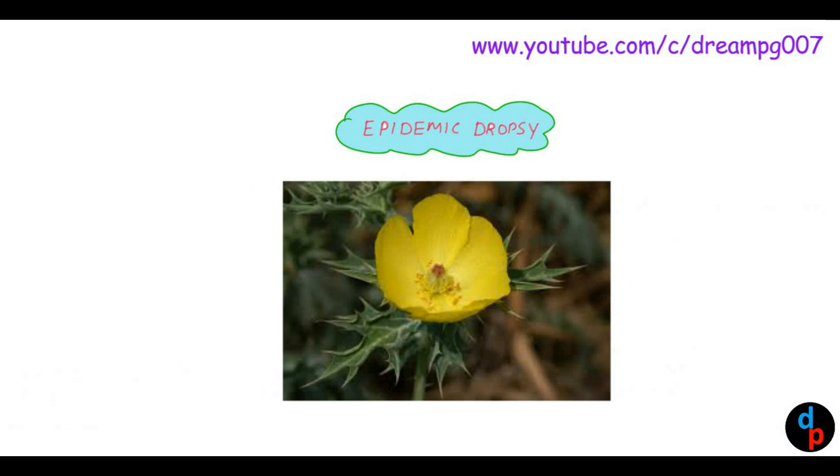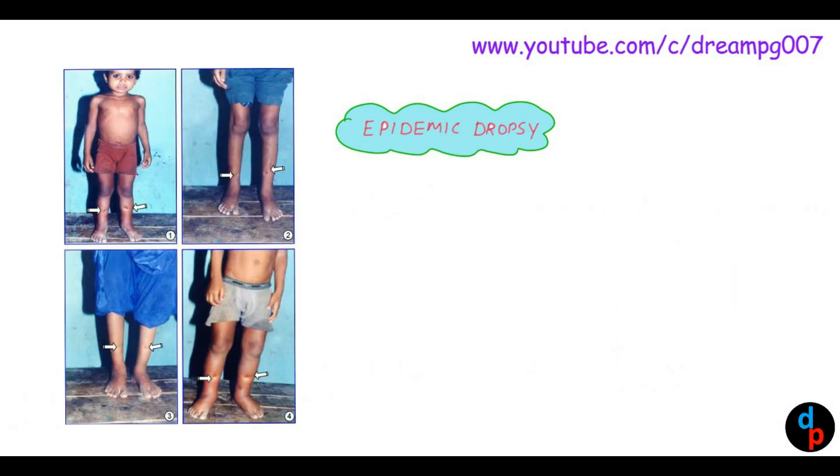This image shows the flower of Argemone Mexicana. This is the image of the child affected with Epidemic Dropsy. As you can see, there is swelling on both legs. Bilateral swelling of legs is the first and most common clinical manifestation in Epidemic Dropsy.